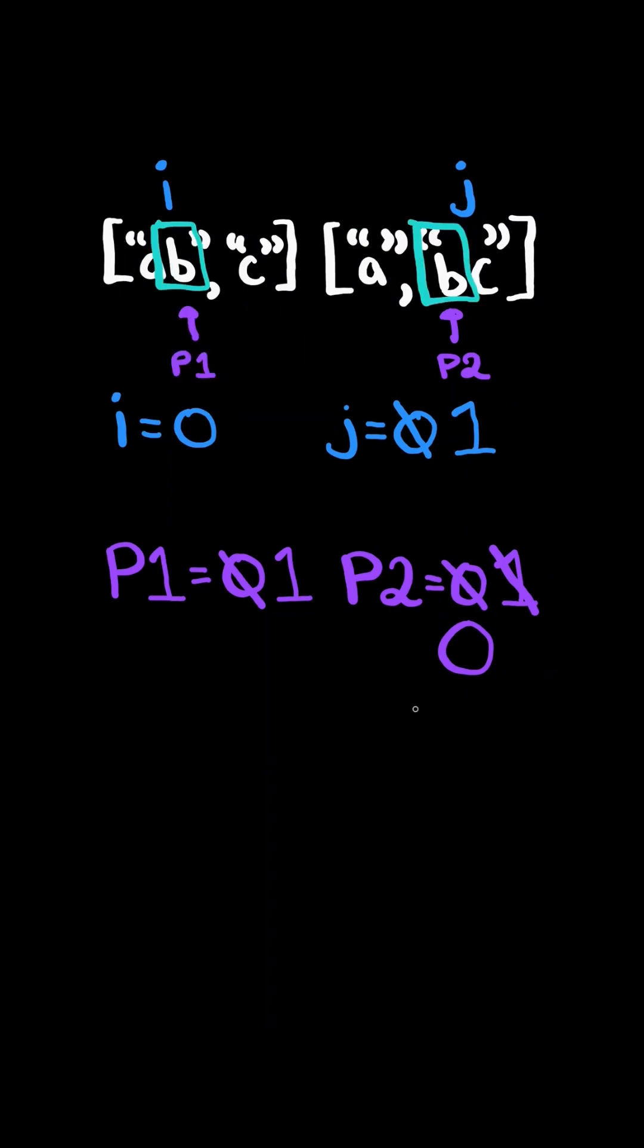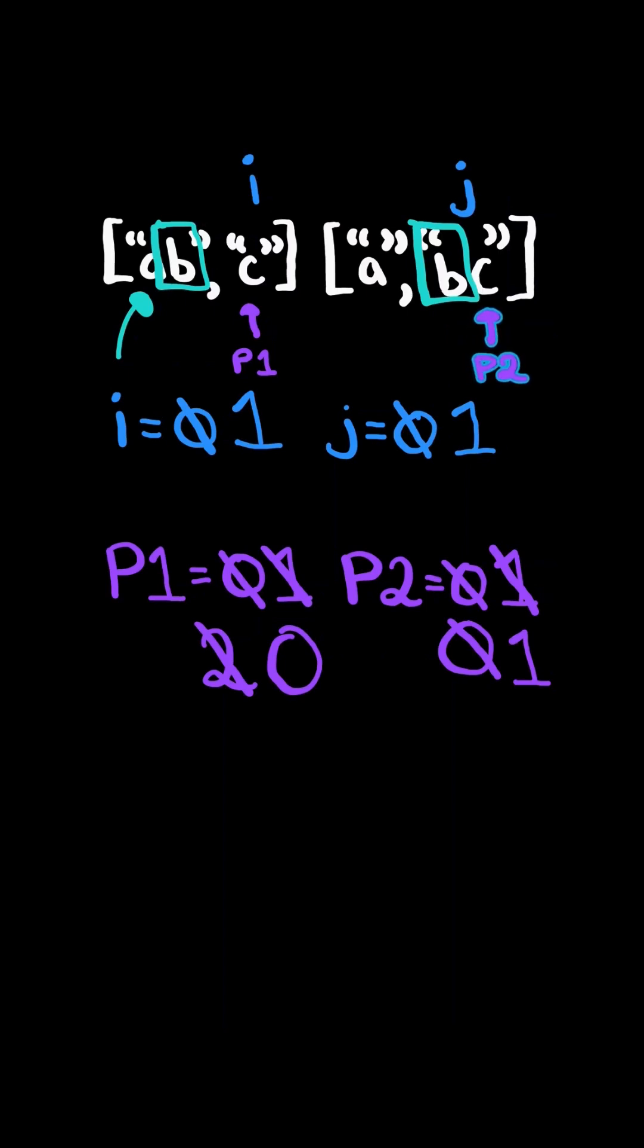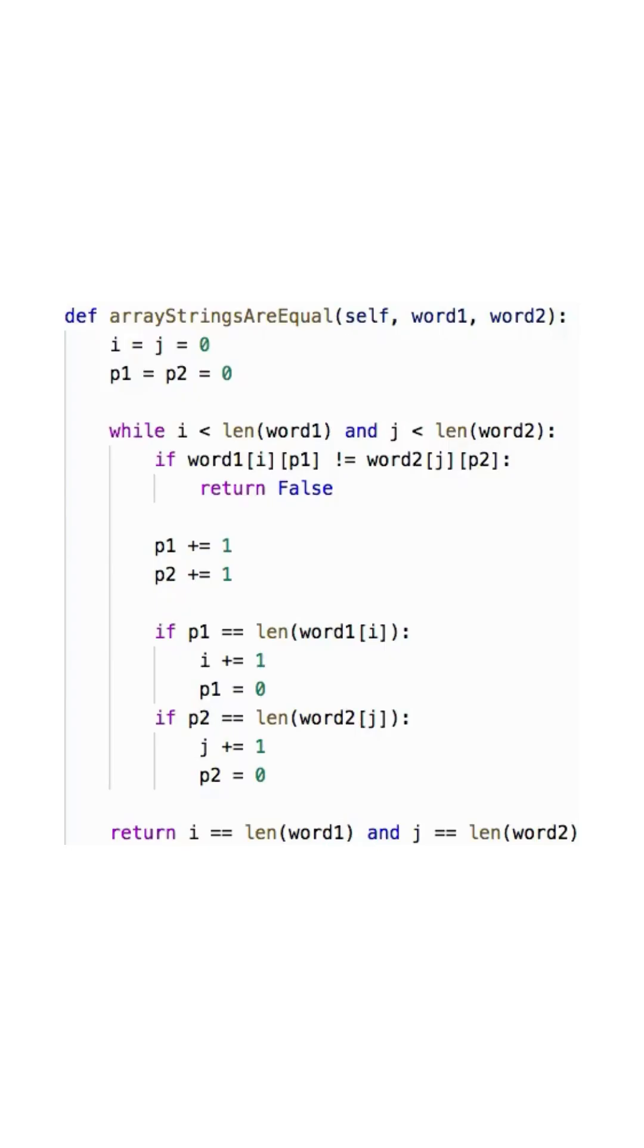The values at P1 and P2 are the same, so we continue. We increment P1 and P2. P1's count equals the length of the string, so we increment the array index and reset the string index to 0. And let's not forget to move P2 to index 1. And here's the code to do so.